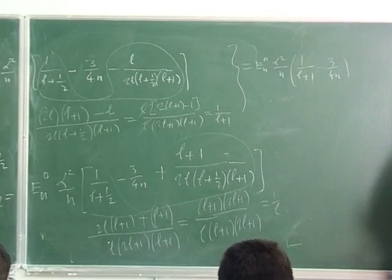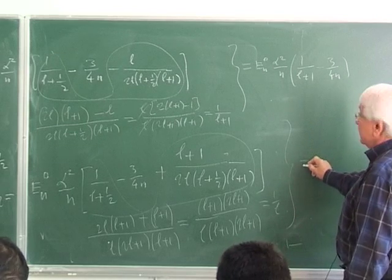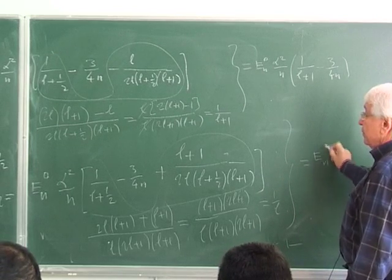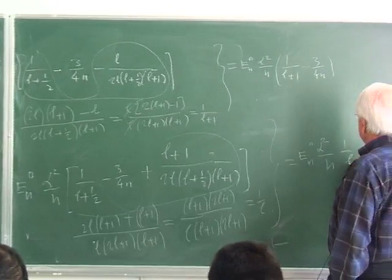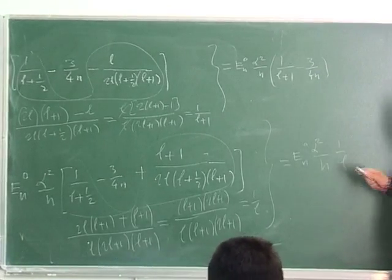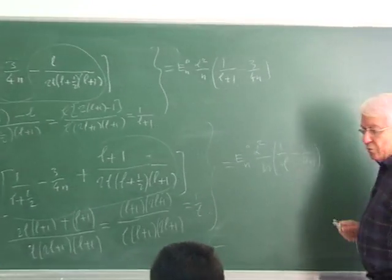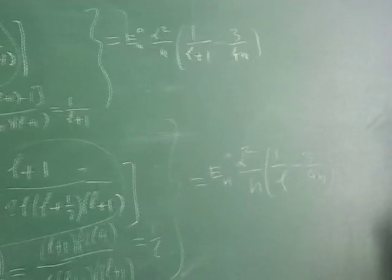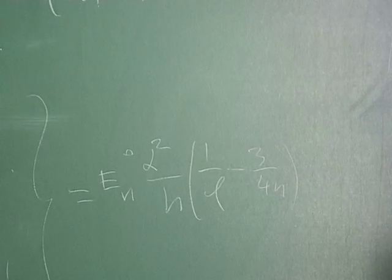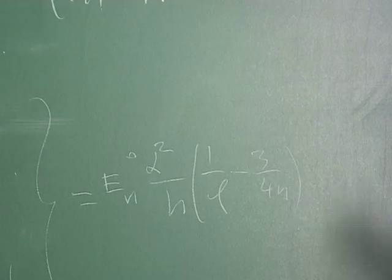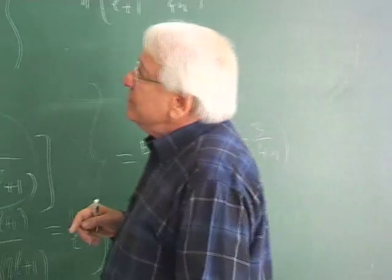Incredible simplification all of a sudden. So this result is En0 times alpha squared over N times 1 over L, minus 3 over 4 — of course, that's always there. So these two are the J equals L plus 1 half and J equals L minus 1 half results.